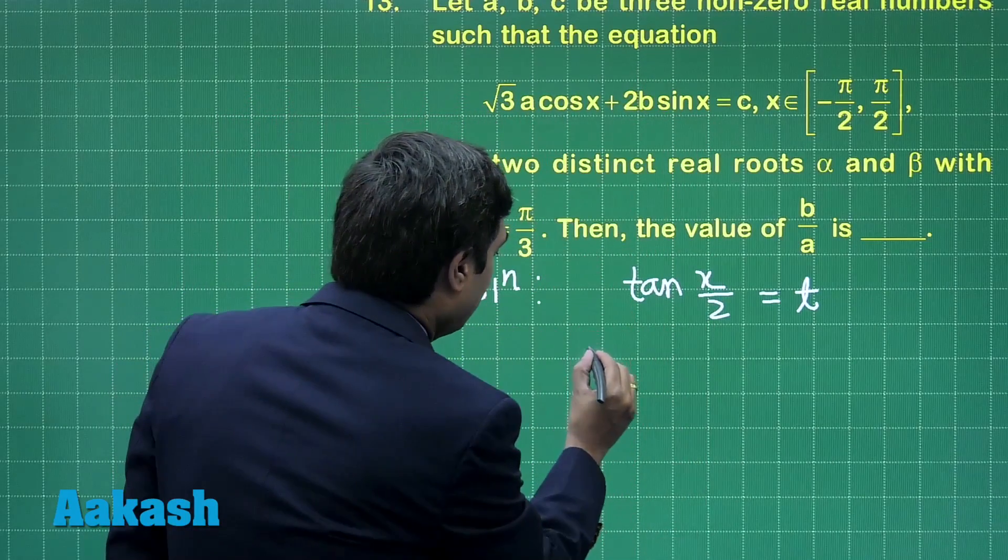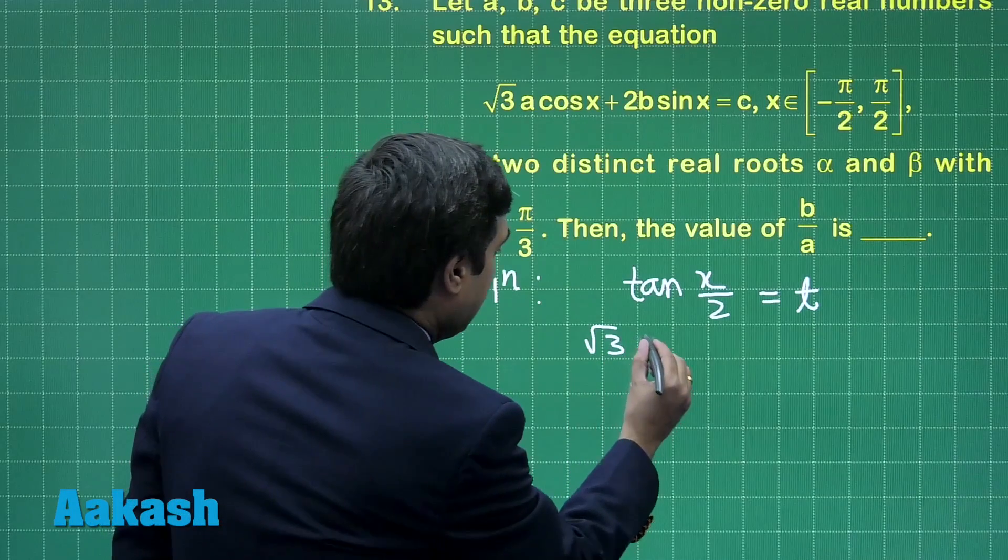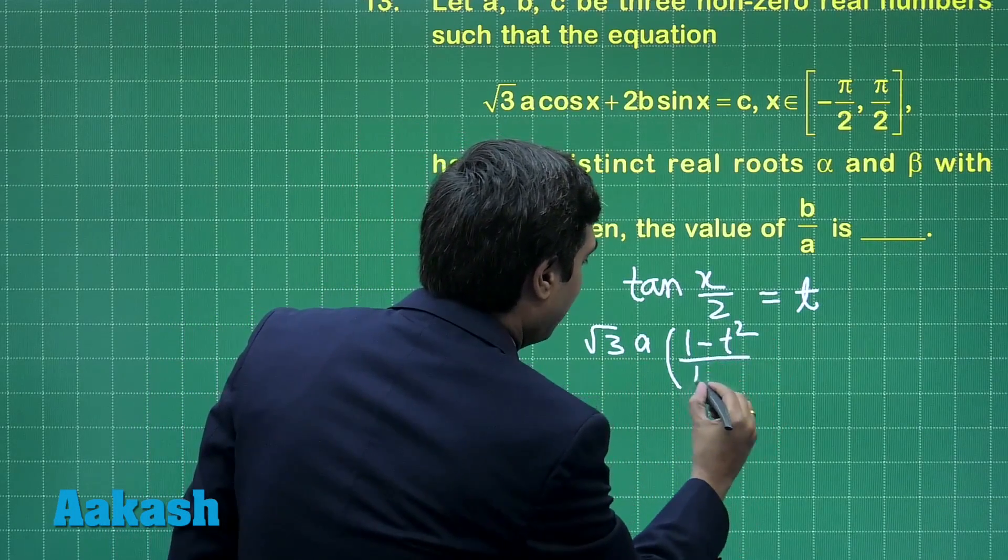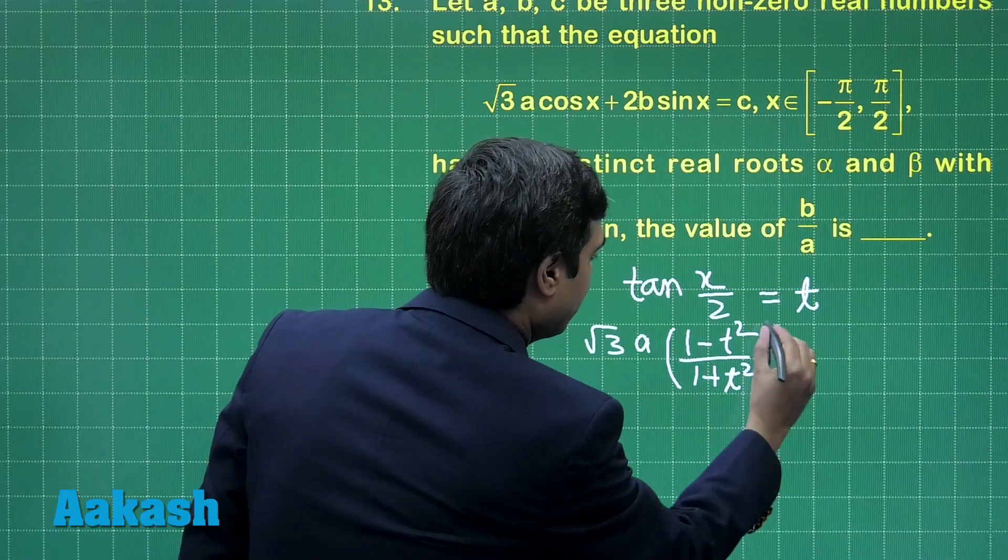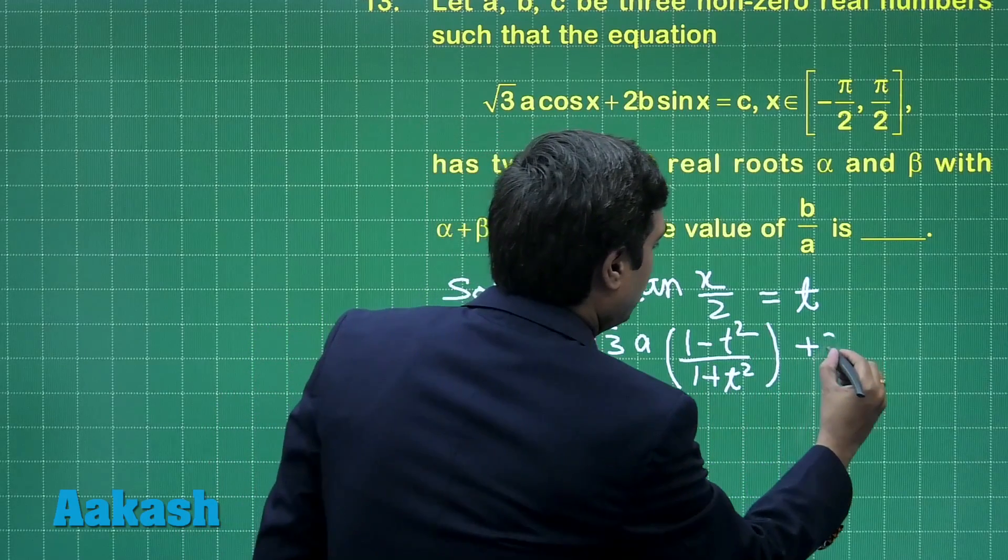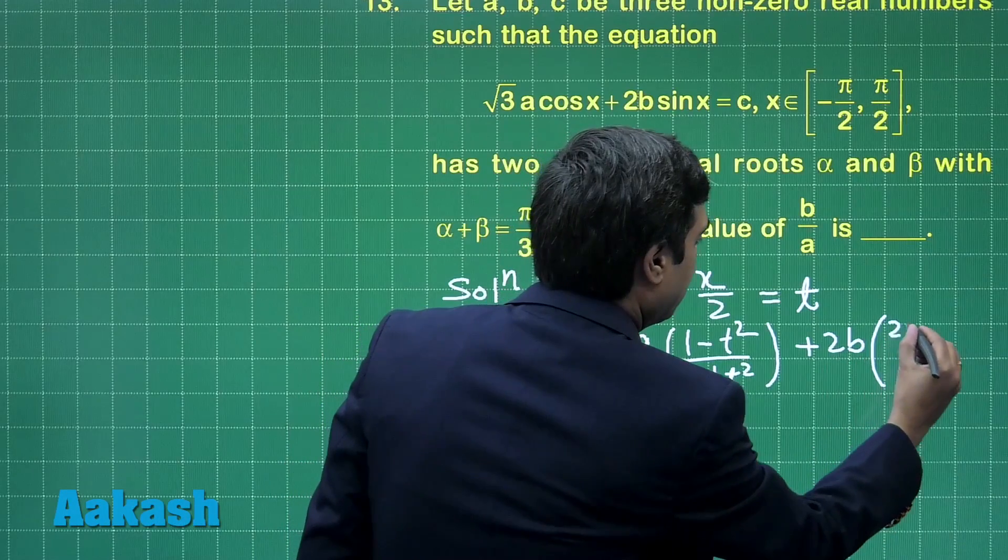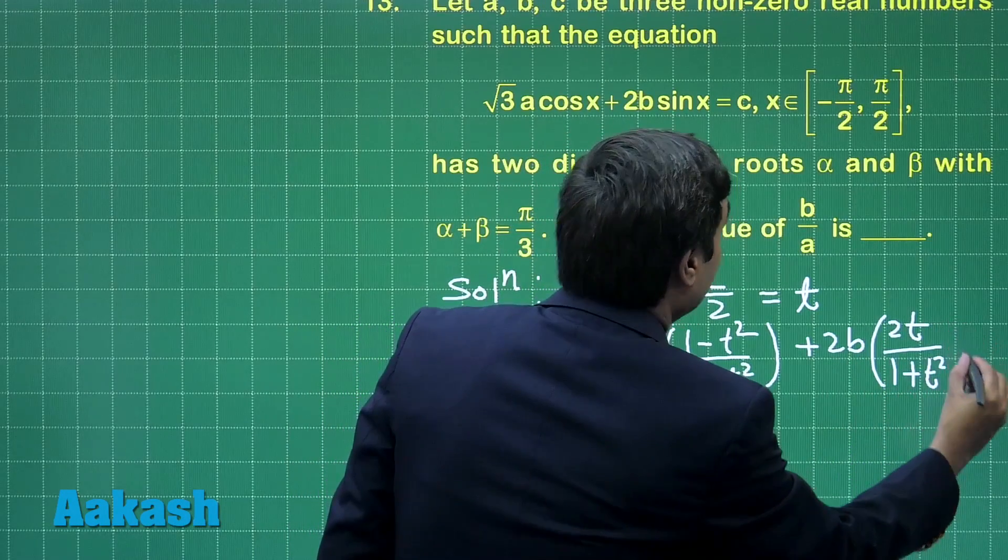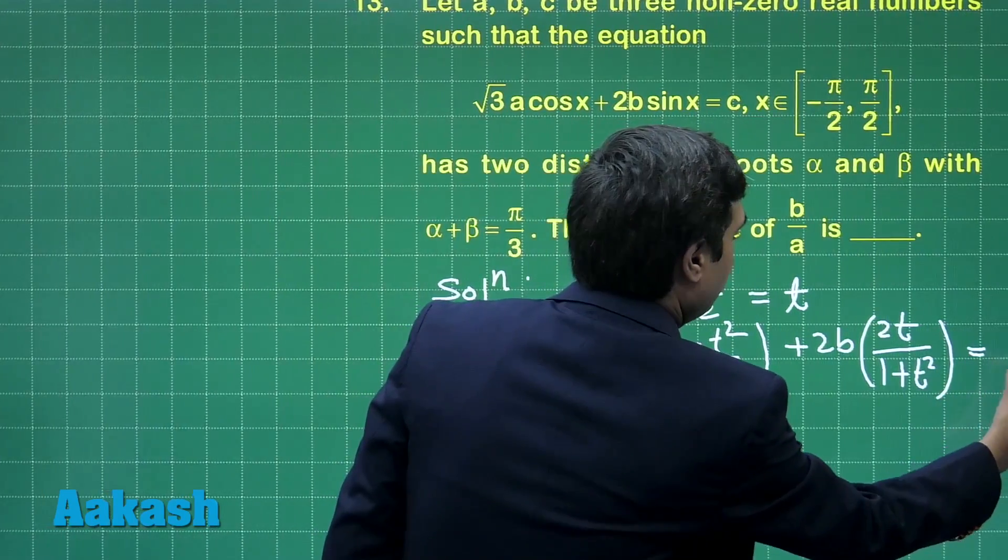So simply we have √3·A(1 - t²)/(1 + t²) plus 2B·2t/(1 + t²) equals c. Simplifying this equation as quadratic in t,